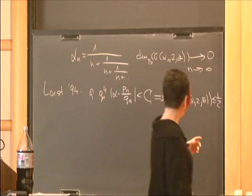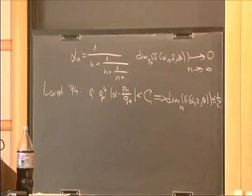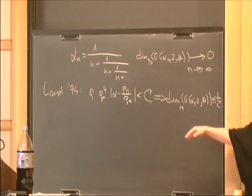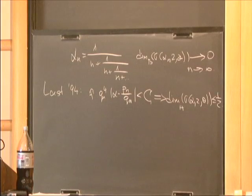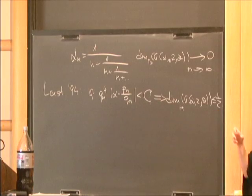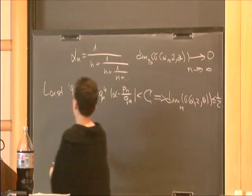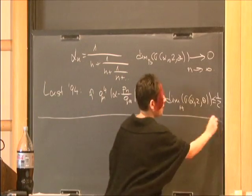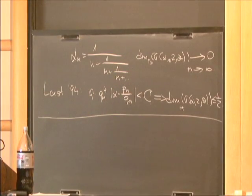And although the set of alphas in this result is a generic set from the topological point of view, being a G-delta-dense set, it's still a set of zero Lebesgue measure. Now what I would like to do is to tell you briefly about the main idea behind this result.